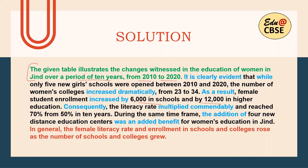Consequently, the literacy rate multiplied commendably and reached 70% from 50% in 10 years. The result was that the literacy rate multiplied and reached 70% in 2020 from 50% in 2010. During the same timeframe, the addition of four new distance education centers was an added benefit for women's education. In general, the female literacy rate and enrollment in schools and colleges rose as the number of schools and colleges grew. That is the conclusion — female literacy rate as well as enrollment both increased as colleges and schools were added.